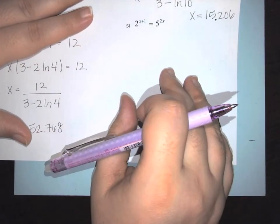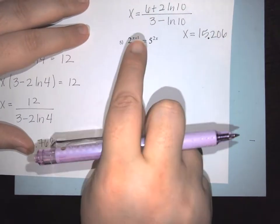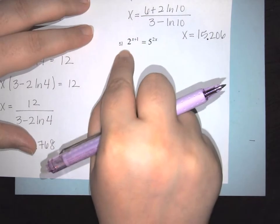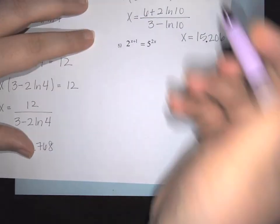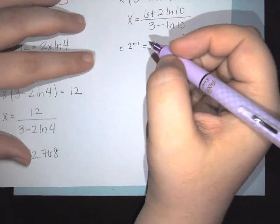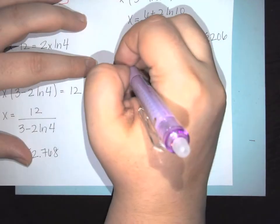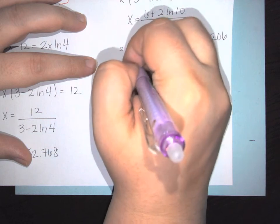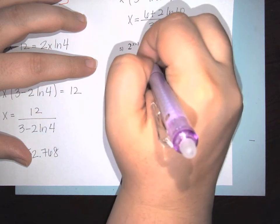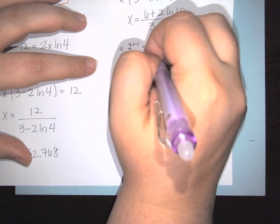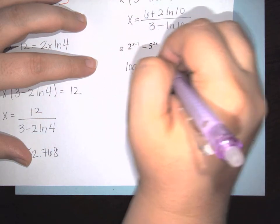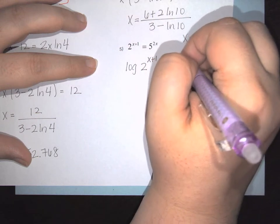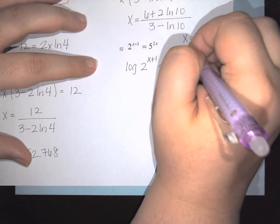All right, last but not least — raise each side to the log: log of 2 to the (x plus 1) equals log of 5 to the (2x).